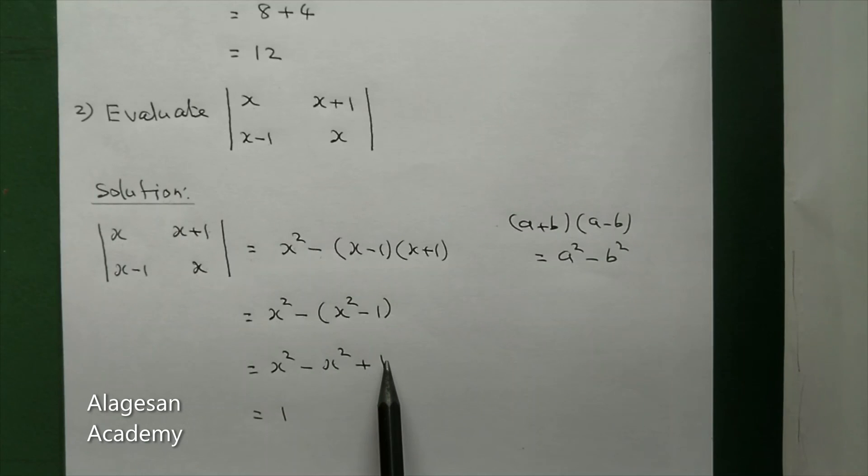Next, x² minus x² cancels, so we get 1. So the answer is 1. That's all. Can you understand this problem?